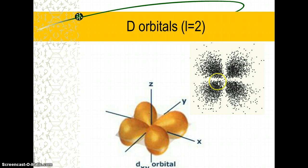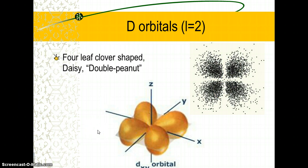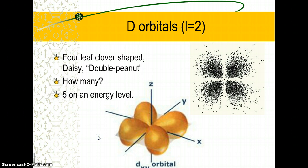Other types of electrons give a pattern with two lines of symmetry where the electron was not found — two nodes, so we use two as the quantum number. When we draw the boundary, we get a shape often described as a four-leaf clover or flower — it's a d-orbital, or you can think of it as a double peanut. There are always five d-orbitals on any given energy level.